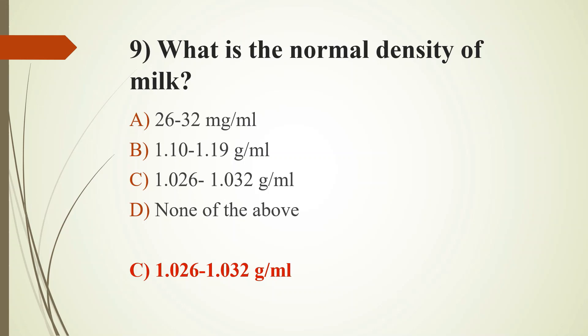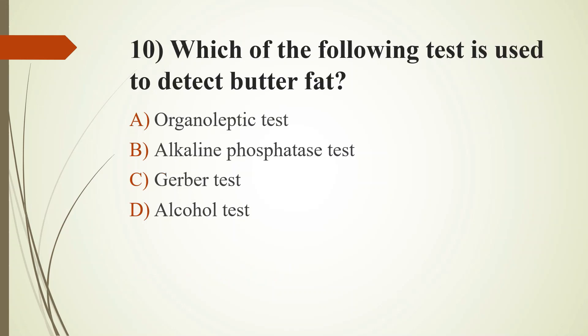Tenth question: Which test is used to detect butterfat? Option A: Organoleptic test; Option B: Alkaline Phosphatase test; Option C: Gerber test; Option D: Alcohol test. The answer is Option C: Gerber test. The other tests are rapid platform tests for milk, already discussed. In the Gerber test, milk is treated with a strong acid and fat is released, then separated using amyl alcohol, and the amount is determined using a butyrometer.